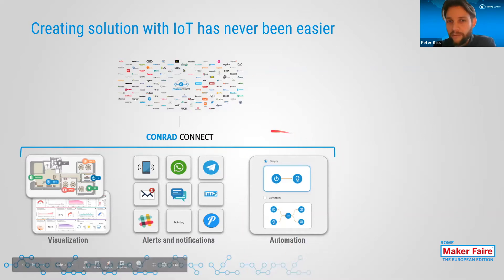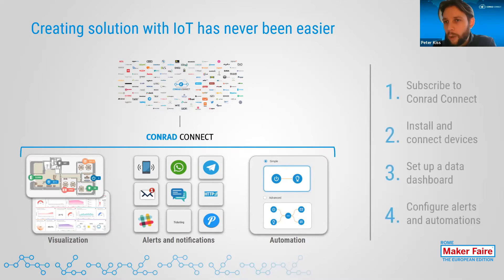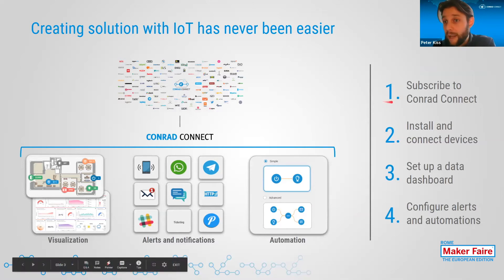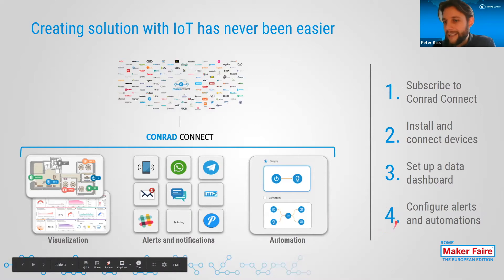Automation is a very strong part of the application. Automation for us means an if-this-then-that logic, but of course the automation rule itself can be much more complex and advanced than just that relation. You can combine all the different sensors and actuators connected to the platform in a completely free way. Using the platform only takes four very easy steps: first, you subscribe; then you connect your devices; then you set up dashboards; and then you configure alerts and smart automations.